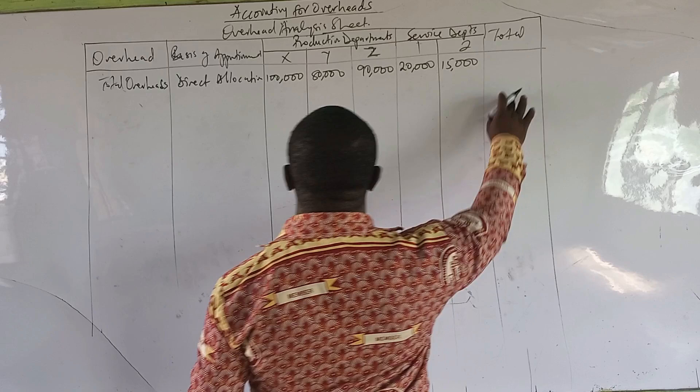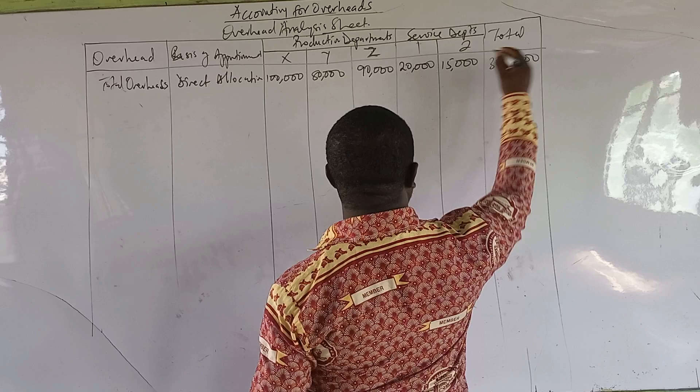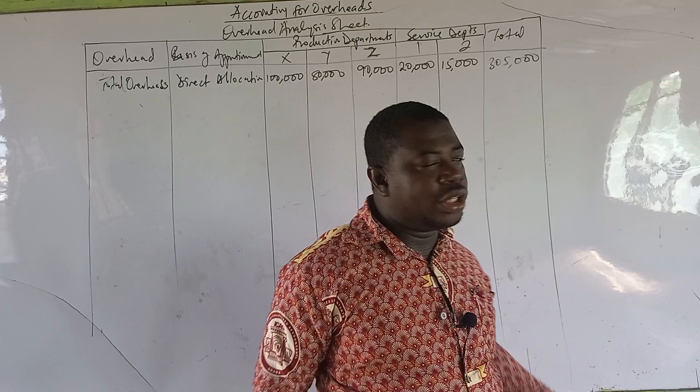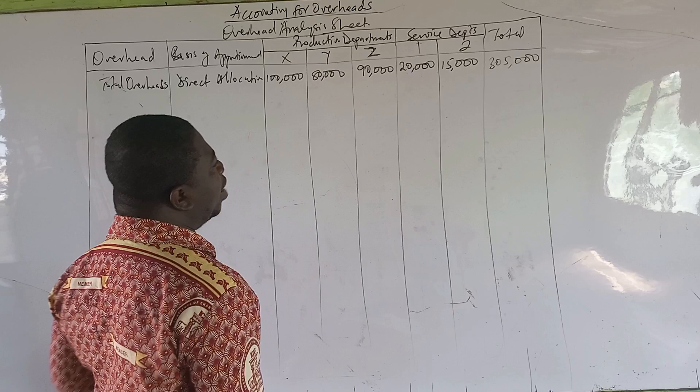We have to find the grand total on our own. The total is 305,000. Up to this point we are no more doing the apportionment. What we are going to do now is reapportionment — we will start with service department 1, then we will do reapportionment 2, using the repeated distribution method.